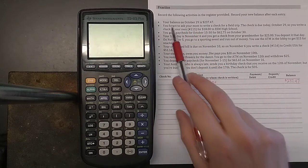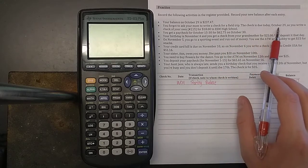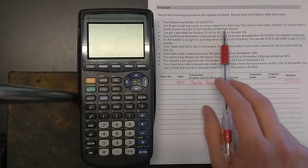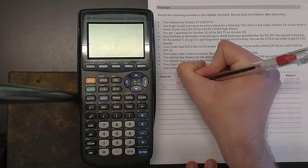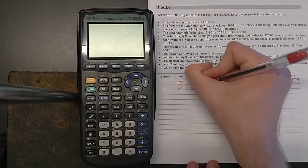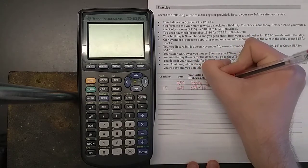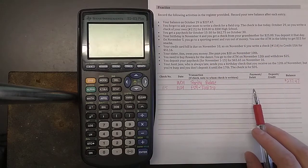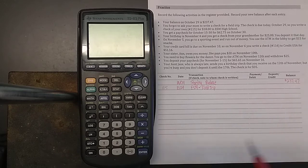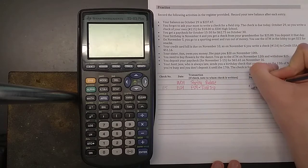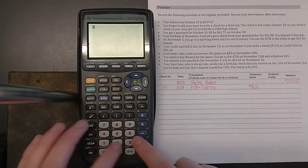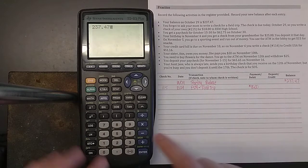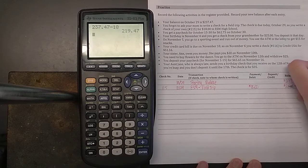The next bullet down will go on the next line. You forgot to ask your mom to write a check for a field trip. The check is due today, October 29th. So you write a check of your own, number 115, for $18 to ESM high school. So check number 115. The date is the 29th of October, 10/29. And the transaction, I'm going to write down ESM. That's who the check is going to. That's important. And I'm going to write dash field trip. So now I know what it's going to. I have to decide if this was a payment or debit or is it deposit or credit? Is the money coming out of my account or going into my account? You're writing the check. You're giving the money to ESM high school. So this is a payment of $18. I'm not going to write anything in deposit and credit because that's not what's happening here. So now I have to do the math. I had $237.47 in my account and I just paid $18 out of it. So that means I subtract my new balance is $219.47.